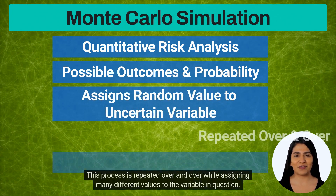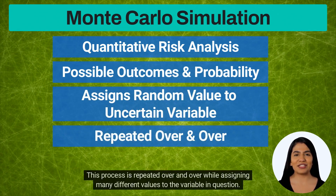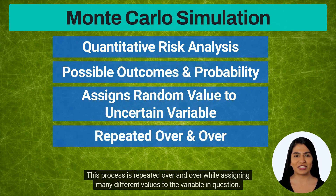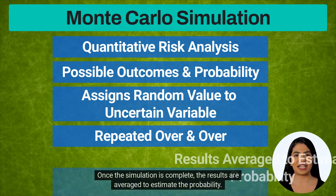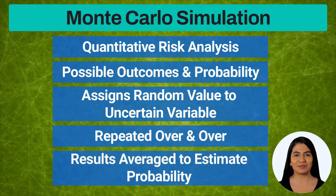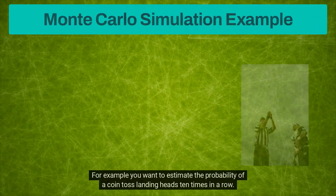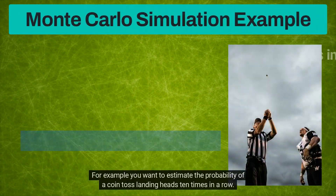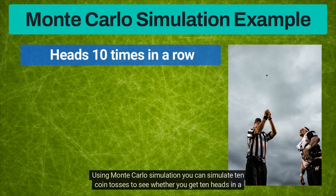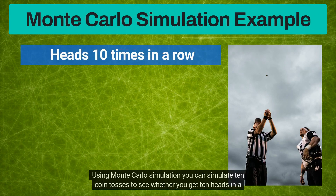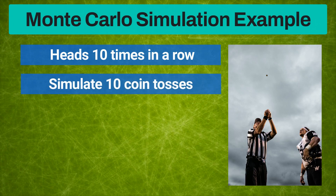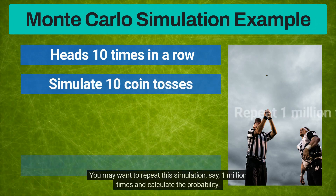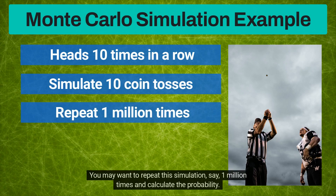This process is repeated over and over while assigning many different values to the variable in question. Once the simulation is complete, the results are averaged to estimate the probability. For example, you want to estimate the probability of a coin toss landing heads 10 times in a row. Using Monte Carlo simulation, you can simulate 10 coin tosses to see whether you get 10 heads in a row. You may want to repeat the simulation 1 million times and calculate the probability.